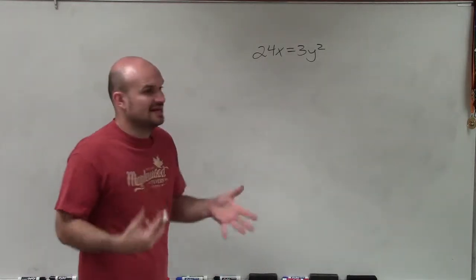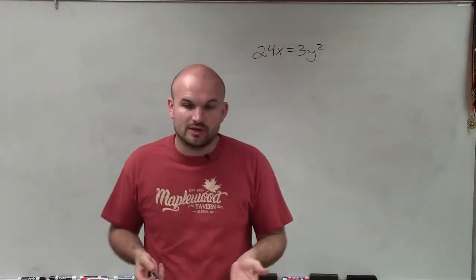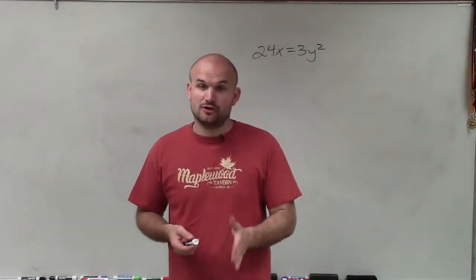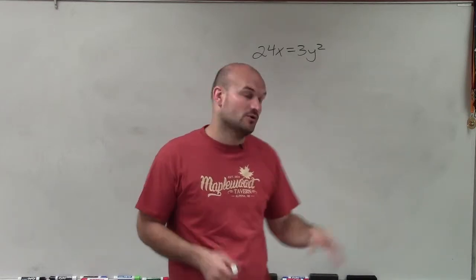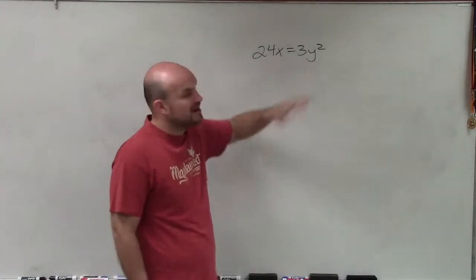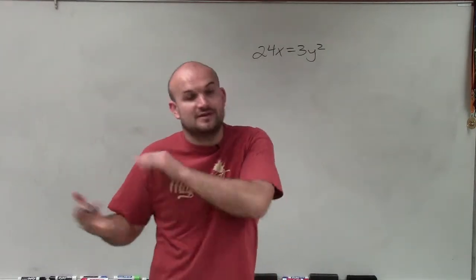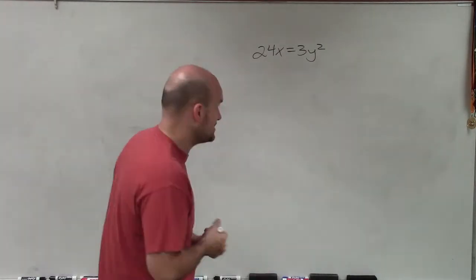The first thing we need to do is identify what type of equation we have. Are we going to have an axis of symmetry that is vertical or horizontal? Since y is squared, I know my parabola is going to either open to the right or to the left. Therefore, the axis of symmetry is going to be horizontal.